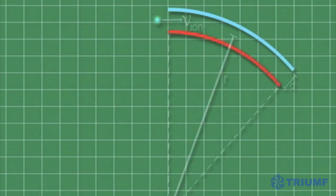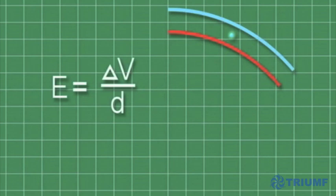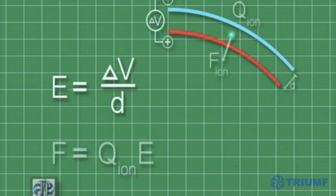The electric field between the plates is dependent upon their potential difference and their separation from each other, and this field causes a force on the ions.